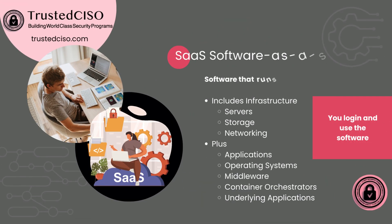SaaS, software as a service, is essentially where you're able to run an application in the cloud, so you don't have to install an application on your workstation or laptop. It includes the infrastructure, storage, and networking, and the cloud service provider also provides the applications, the underlying operating systems, middleware, container orchestrators, and the underlying applications. So essentially all you have to do is log in and use the software. A good example is Office 365 — you buy a license and use it without installing anything on your machine. You are still responsible for your own data, and that doesn't matter whichever level you're at.